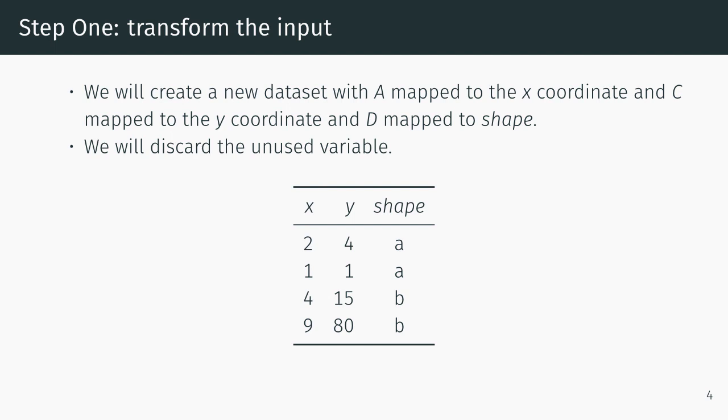We'll create a new data set with A mapped to the x-coordinate and C mapped to the y-coordinate and D mapped to shape, and we will discard the unused variable B.